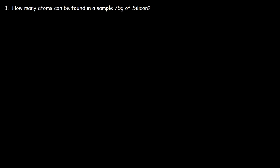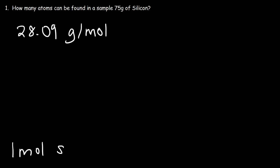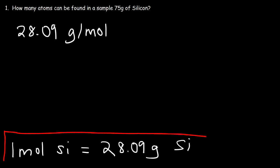In order to convert grams to moles, you need to use the molar mass of silicon. Based on a periodic table, the molar mass of silicon is 28.09 grams per mole. This means that one mole of silicon contains a mass of 28.09 grams. And so this is the conversion factor that we're going to use.